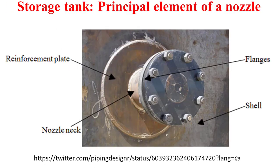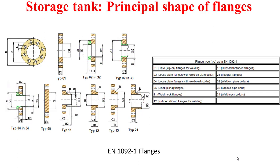For the nozzle, it is constituted of some main elements. The first one is the opening on which the nozzle will be carried out; this opening can be made on the shell or on a formed head. We also have the nozzle neck, the flanges, and in some cases, for reasons of resistance, we have to add a reinforcement plate in the neighborhood of the nozzle opening.